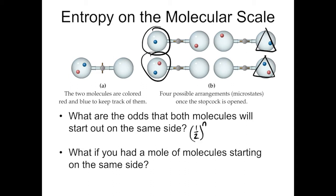We can generalize this to say that the odds of any number of molecules ending up on the same side is one in two to the n. In our case, one over two to the two. The odds of both of the molecules ending up on the same side is one in four.